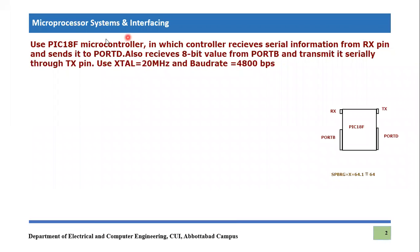Let's read the statement of the program we have to write for this example. We will use a PIC18F microcontroller in which the controller receives serial information from the RX pin. We are talking about asynchronous mode, and we have to send that received information to Port D, so Port D will be our output port.